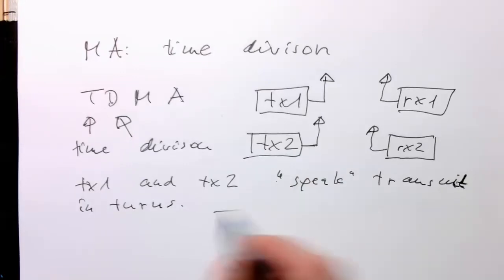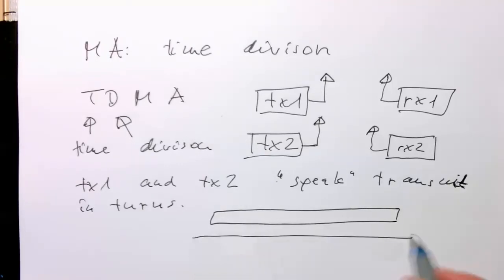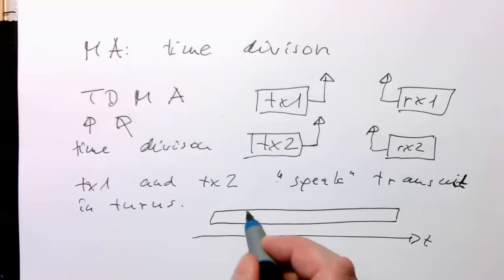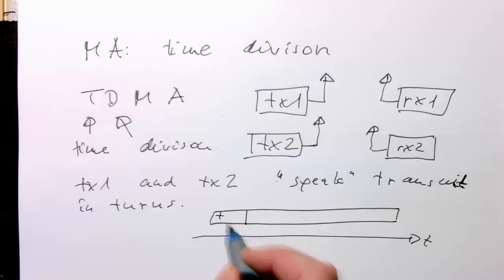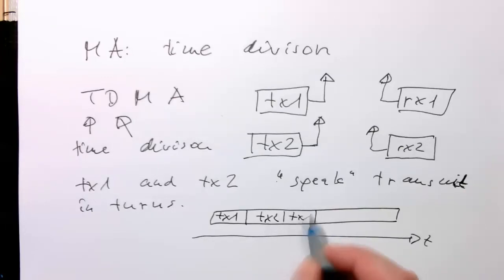If you're looking at the time axis, that's your T. First transmitter one transmits, then transmitter two transmits, then transmitter one again,